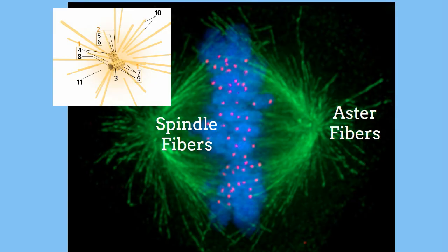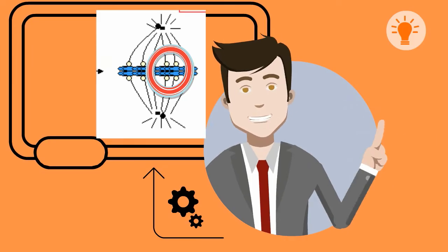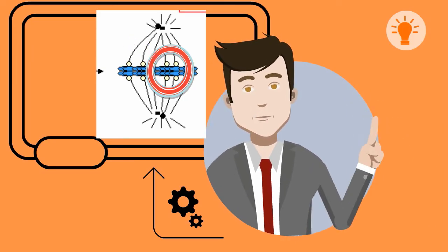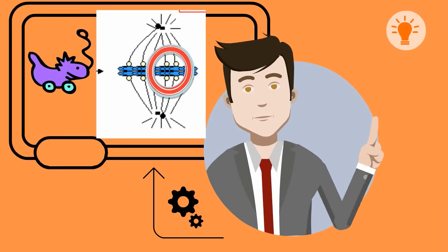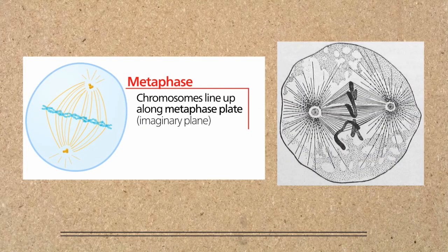Next the spindle fibers attach to the centromeres of the sister chromatids at the kinetochore. After the spindle fiber is attached at the kinetochore, the sister chromatid is pulled along the spindle apparatus and eventually ends up around the middle of the cell.